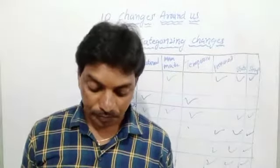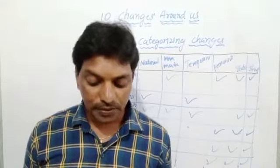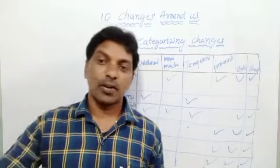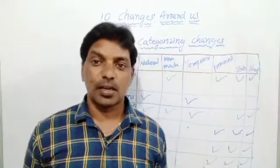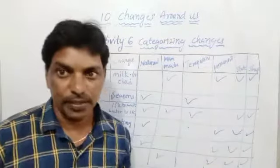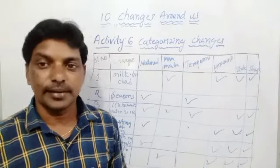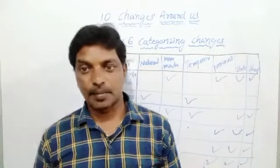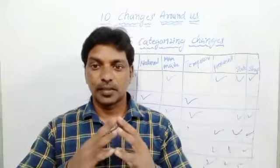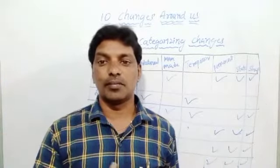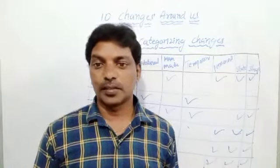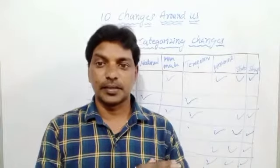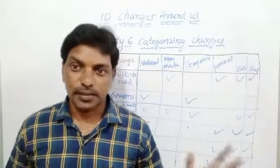The total lesson is now complete. What we have learned in this chapter — changes around us — is that changes are categorized as slow or fast, permanent or temporary, and natural or man-made. We can observe all the changes around us in our surroundings and classify them. You can find more examples and write whether they are slow or fast, natural or man-made, permanent or temporary. Those examples will be useful to write in your examination.